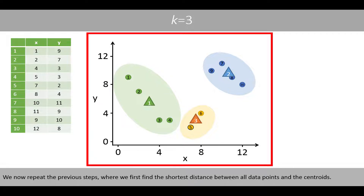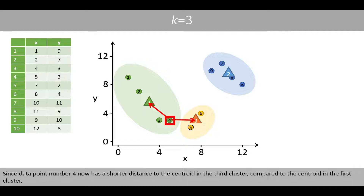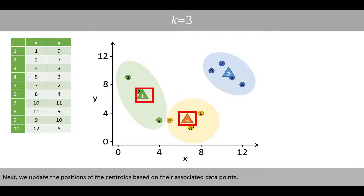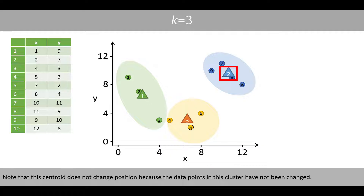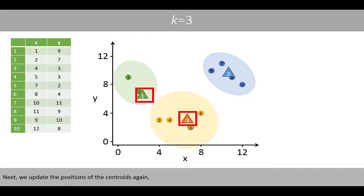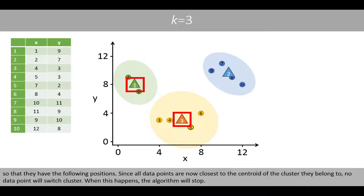We now repeat the previous steps where we first find the shortest distance between all data points and the centroids. Since data point number four now has a shorter distance to the centroid in the third cluster compared to the centroid in the first cluster, it will switch cluster from cluster one to cluster three. Next, we update the positions of the centroids. Note that the centroid of cluster two does not change position because its data points have not changed. Since data point number three is now closer to the centroid of the third cluster, it will also switch cluster. We update the centroid positions again. Since all data points are now closest to the centroids of the cluster they belong to, no data point will switch cluster, and the algorithm will stop.